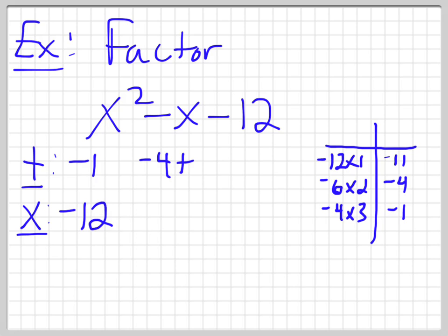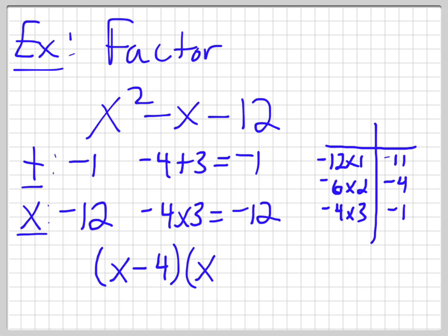So negative 4 plus 3, negative 1, negative 4 times 3 is negative 12. So those numbers work. So negative 4 and 3. So in fact, the formula becomes x subtract the first number, so x minus 4, and x plus 3.